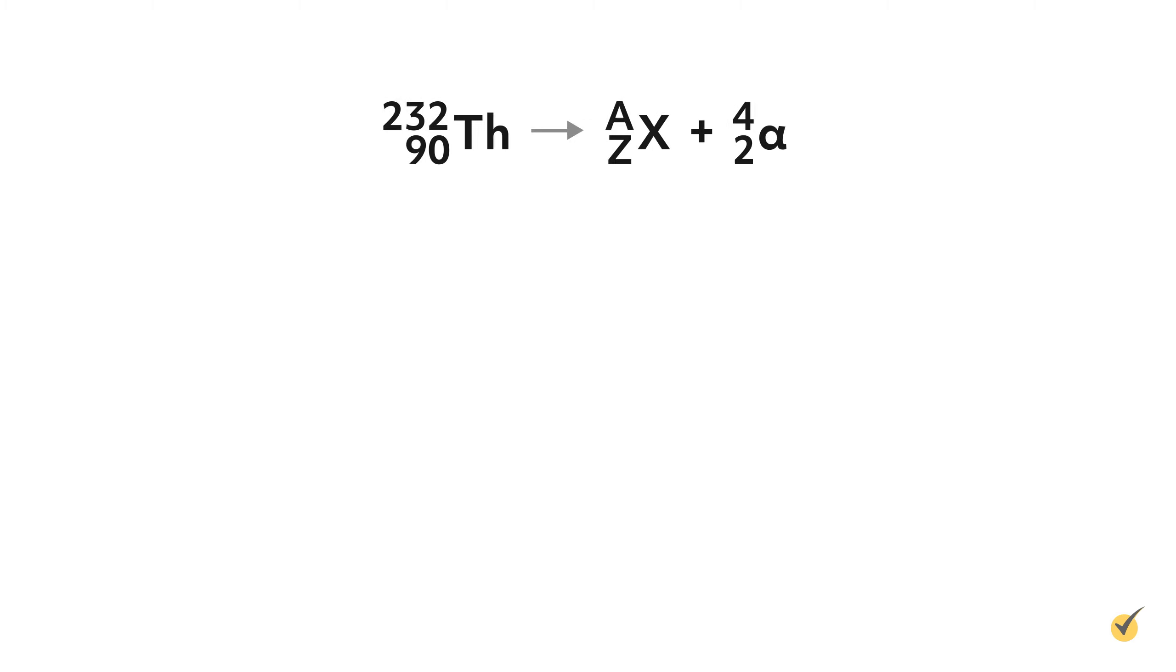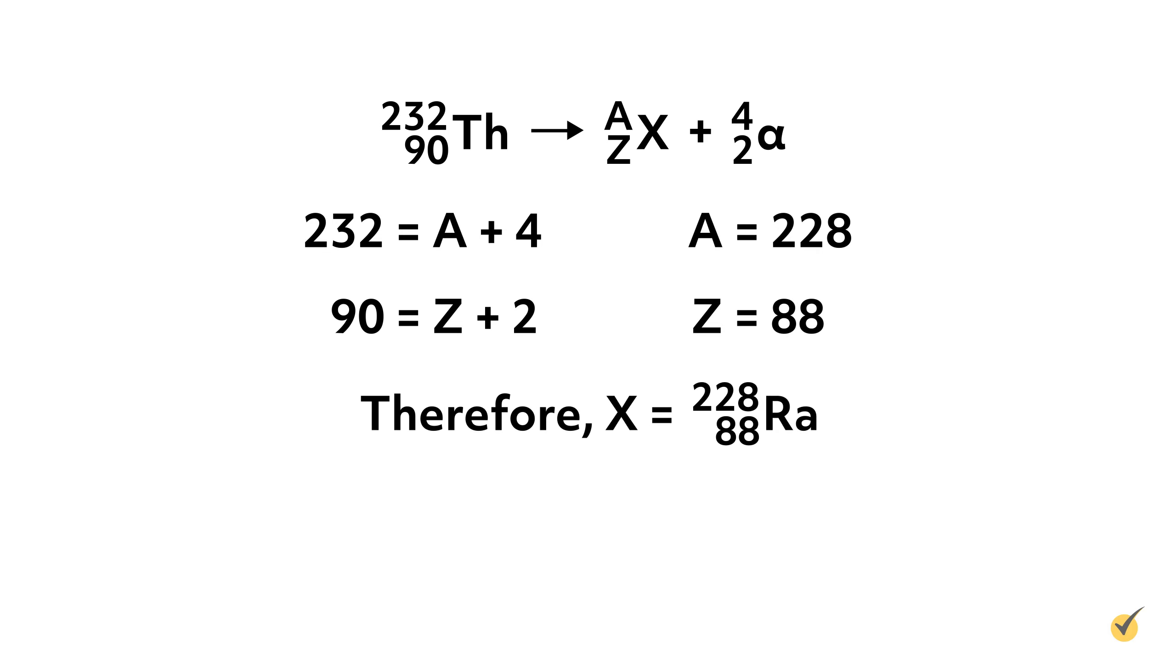Number one: first write out what you know. Thorium decays into something plus an alpha particle. Now solve for the unknown particle using the following equations. 232 equals A, the unknown mass number, plus 4, so A equals 228. Also, 90 equals Z, the unknown atomic number, plus 2, so Z equals 88. Therefore, the resulting isotope X is radium-228. And we can write the equation as thorium-232 decays into radium-228 and an alpha particle.